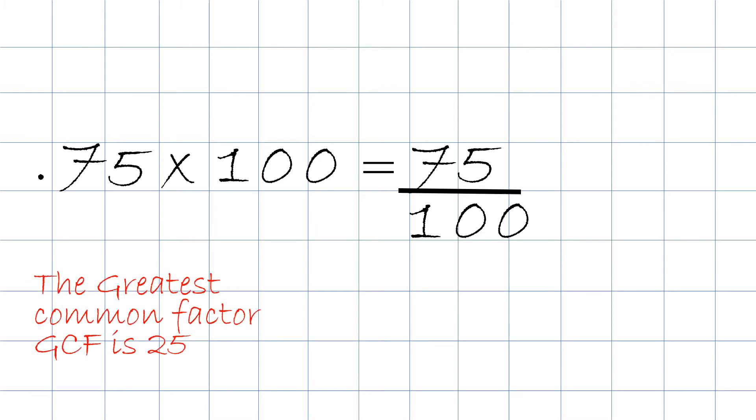And now we got the fraction 75 over 100. We then have to reduce 75 over 100. The greatest common factor or the GCF will be 25. Once again, if you don't know how to reduce fractions, we do have a video for it. But 25 will be the greatest factor of both 75 and 100. We take 75 divided by 25. The answer will be 3. And then we take 100 divide by 25, and the answer will be 4. So, 0.75 fraction format will be 3 over 4.